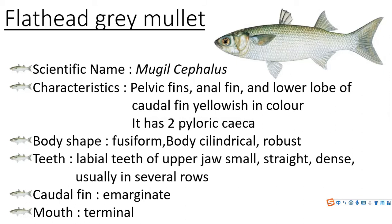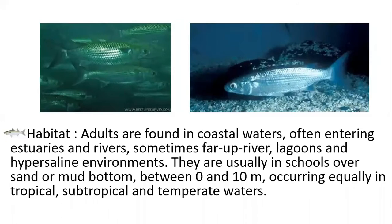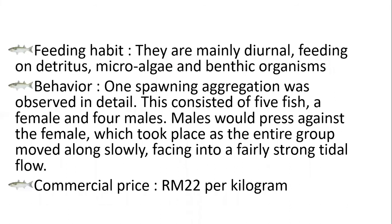The type of mouth is terminal. The adults are found in coastal waters, often entering estuaries and rivers, sometimes far upriver, lagoons, and hypersaline environments. They are usually in schools over sand or mud bottom, between 0 and 10 meters, occurring equally in tropical, subtropical, and temperate waters. The feeding habits of the flathead gray mullet are mainly diurnal, feeding on detritus, microalgae, and benthic organisms.